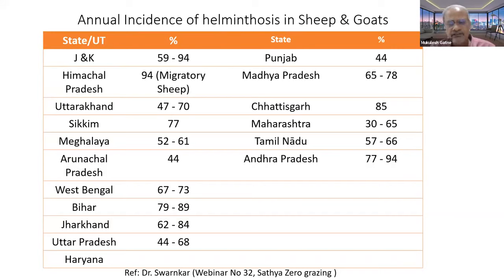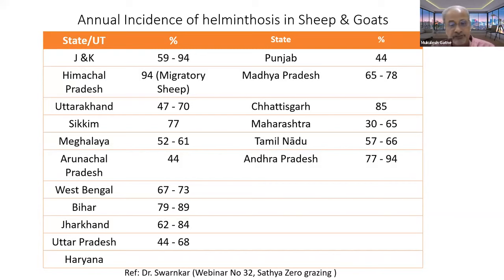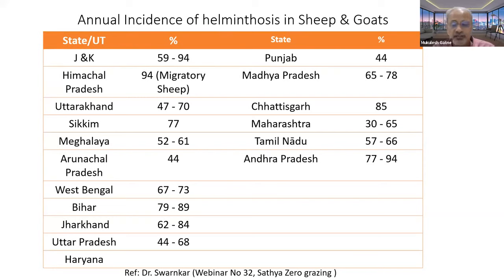That means two out of three animals are positive for worms. Many cases represent mixed infection, and as a result there is a tremendous economic loss. In order to curb these economic losses, one has to control the worm infections in these animals.